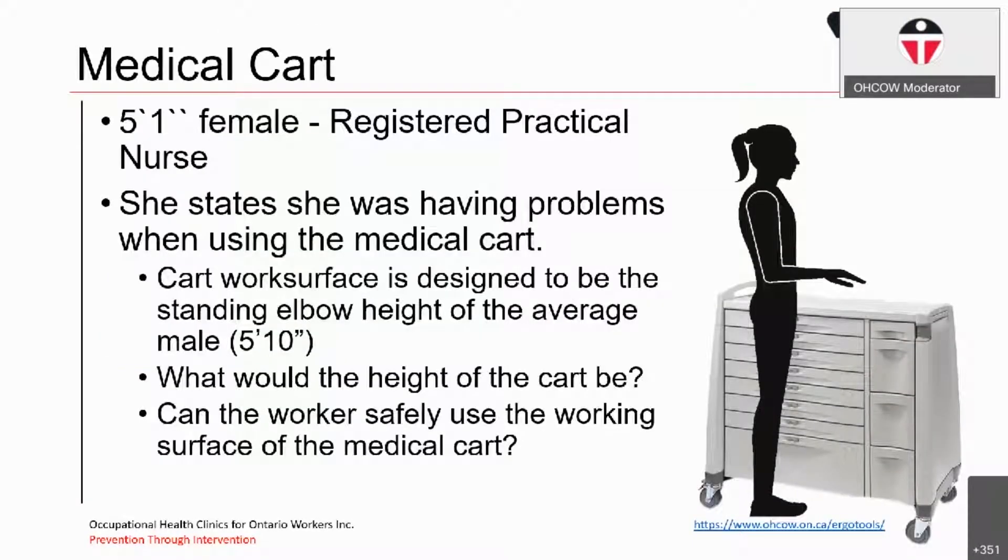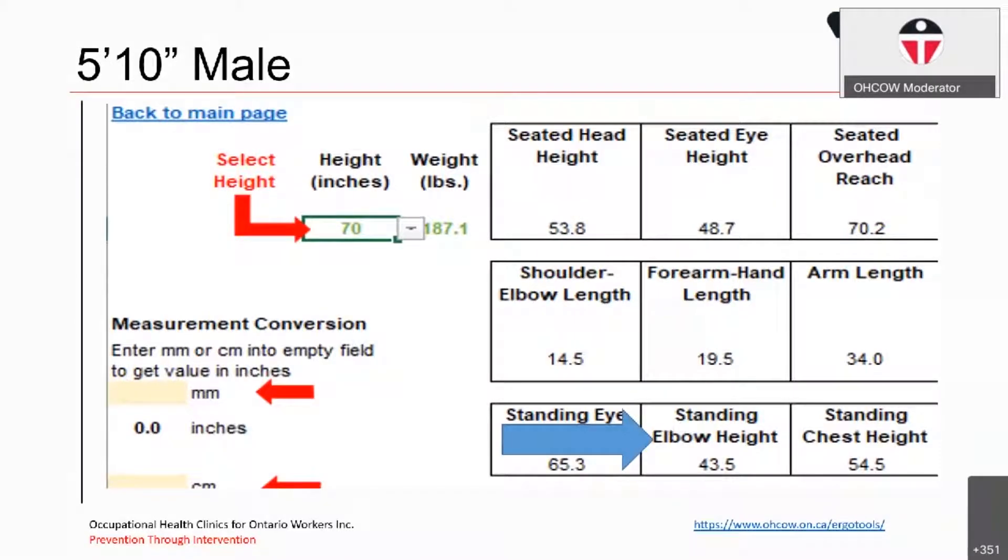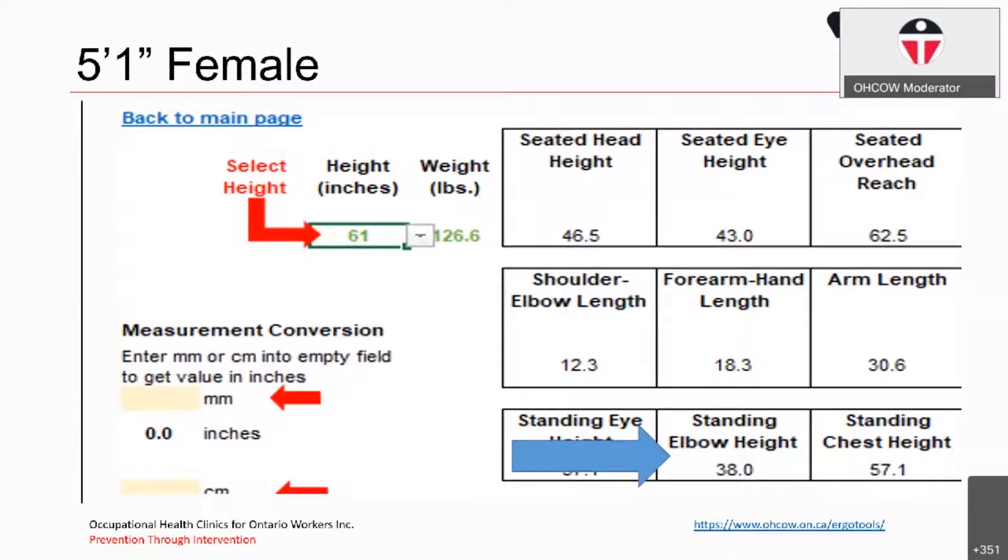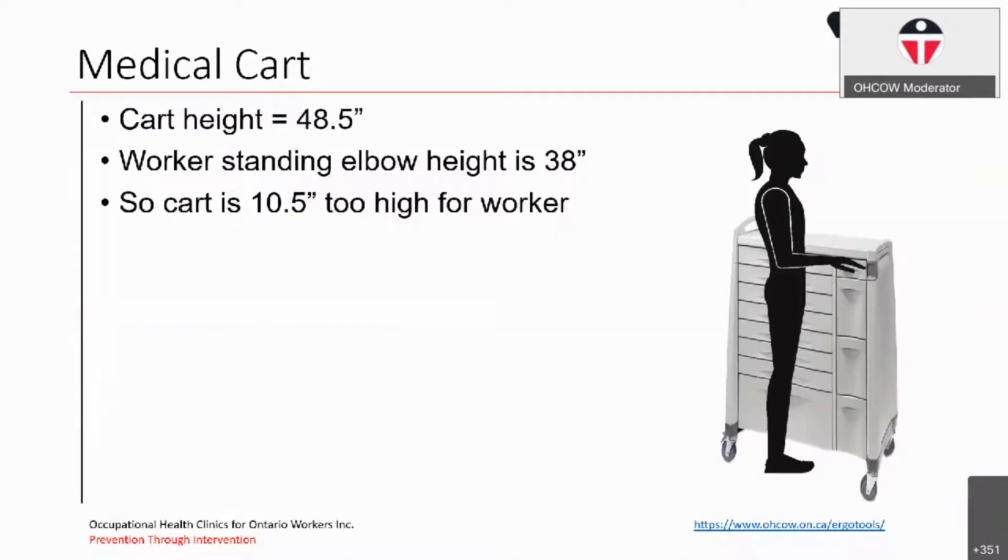Another example would be a 5'1 registered nurse. She states that she's having problems when using a medical cart. The cart work surface is designed to be the standing elbow height of the average male who's 5'10. So what would the height of the cart be? And can the worker safely use the cart? Well, so we first put in the height for our male worker of 70 inches, and we find that standing elbow height is 43.5. So that means that the medical cart is 43.5 inches high. We then calculate the standing elbow height for the 5'1 female and see that that is 38 inches. So when we compare the two, the surface of the cart is actually 10.5 inches too high for this worker.